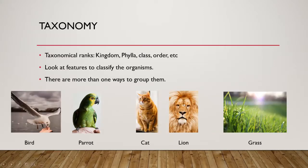Let's start with examples. First, taxonomy — the classification of organisms. Scientists use ranks: kingdom, phyla, class, order, etc., with decreasing order of groupings. But for inductive learning, let's say we are looking at five organisms: some random bird, a parrot, a cat, a lion, and grass. I will ask you to classify or group these.